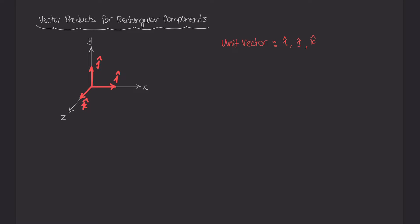In previous videos we learned how to calculate the cross product. So let's say you had two vectors p and q and you wanted to take their cross product. p cross q gives us some vector v, and for the magnitude of v we had a special formula: the magnitude of p multiplied by the magnitude of q, times the sine of the angle between them.